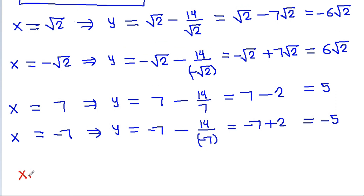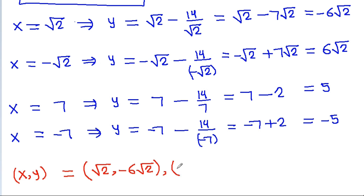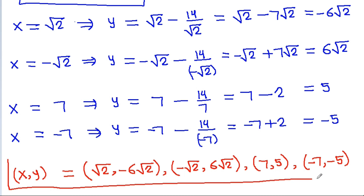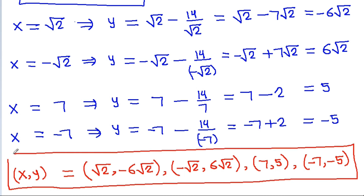So the four solution pairs (x, y) are: (square root of 2, minus 6 square root of 2), (minus square root of 2, 6 square root of 2), (7, 5), and (minus 7, minus 5). These are the four values of x and y.